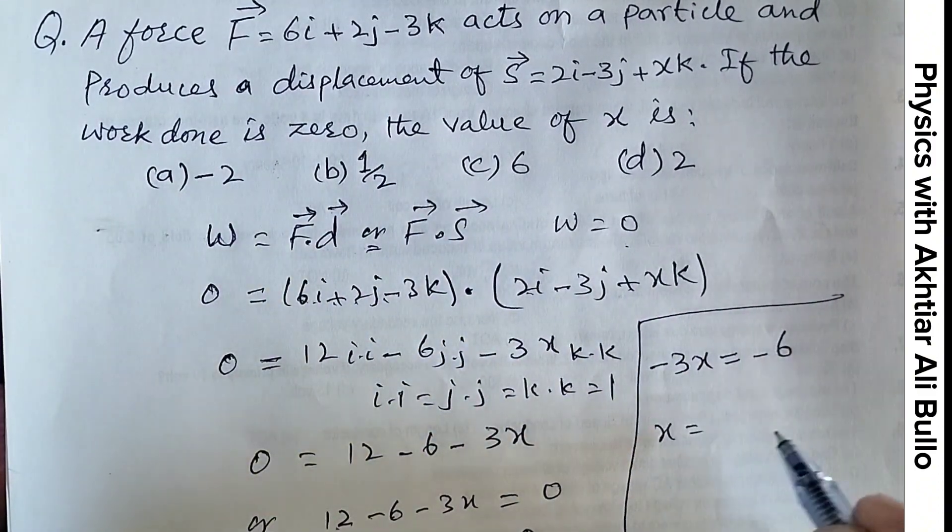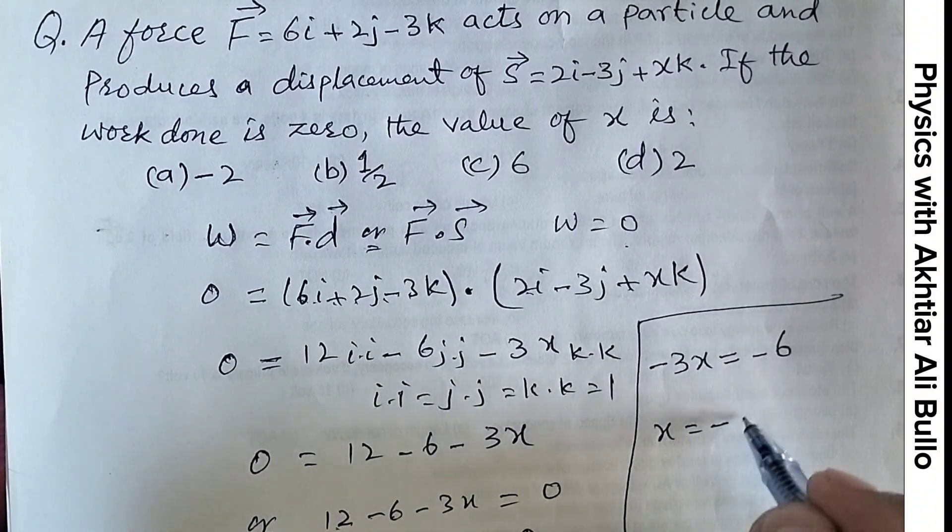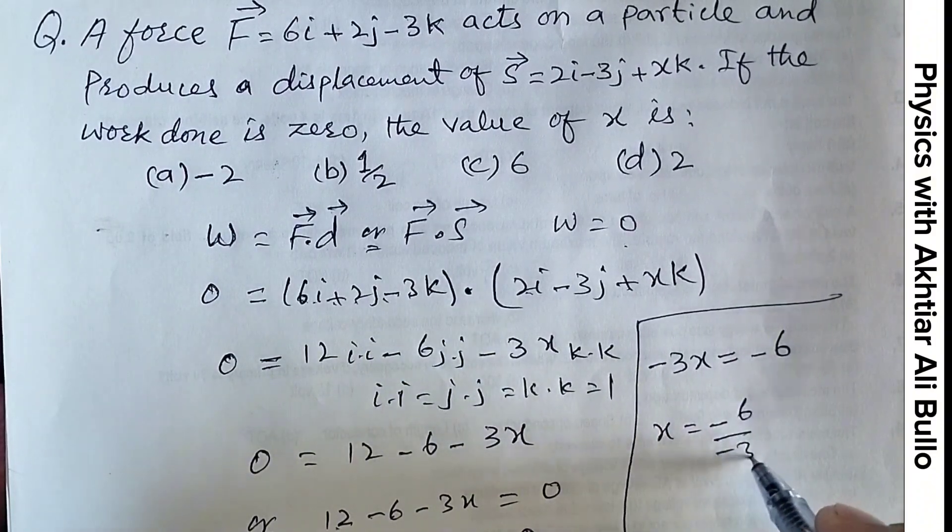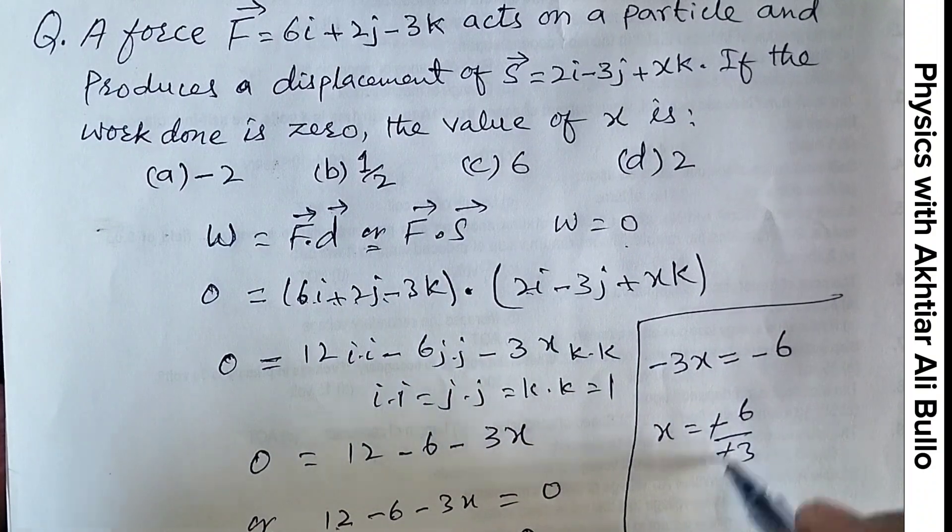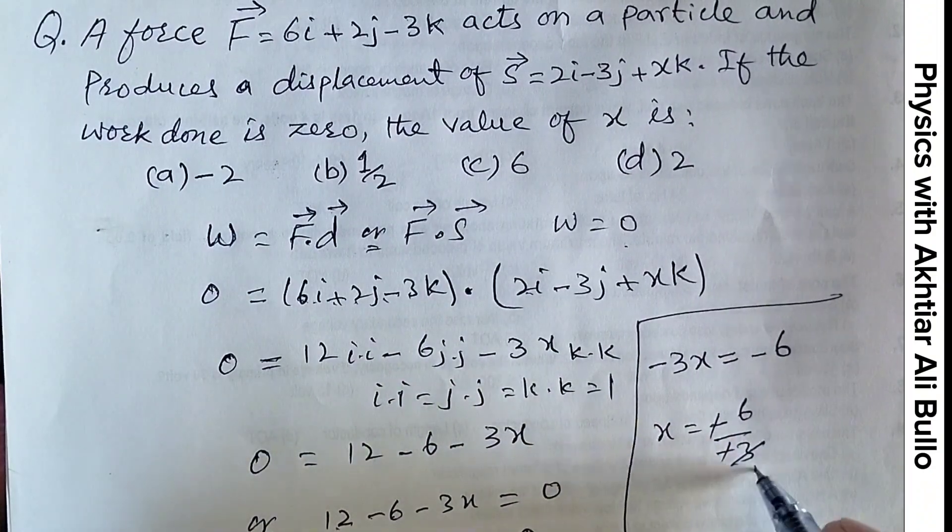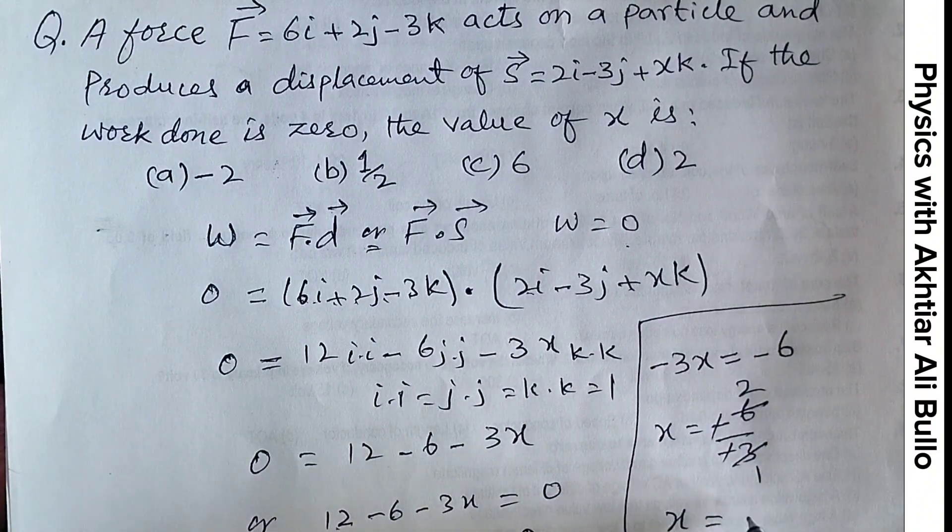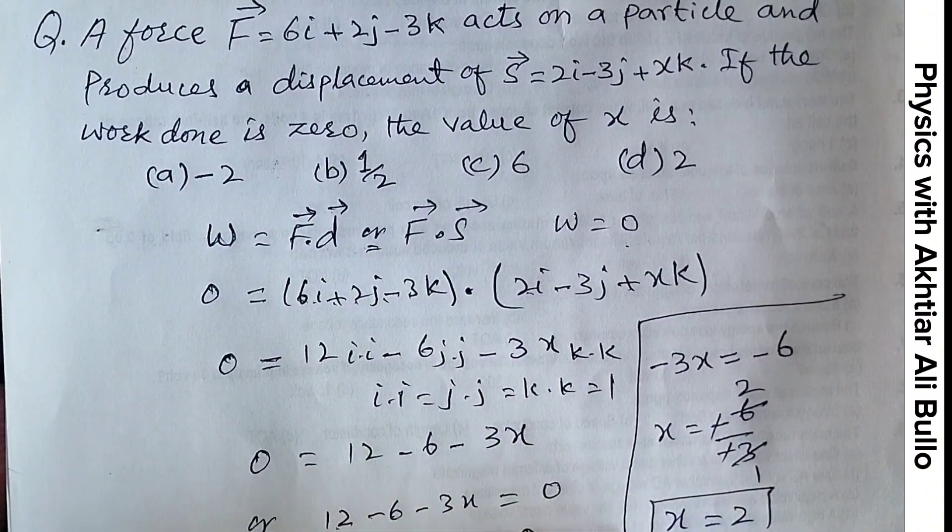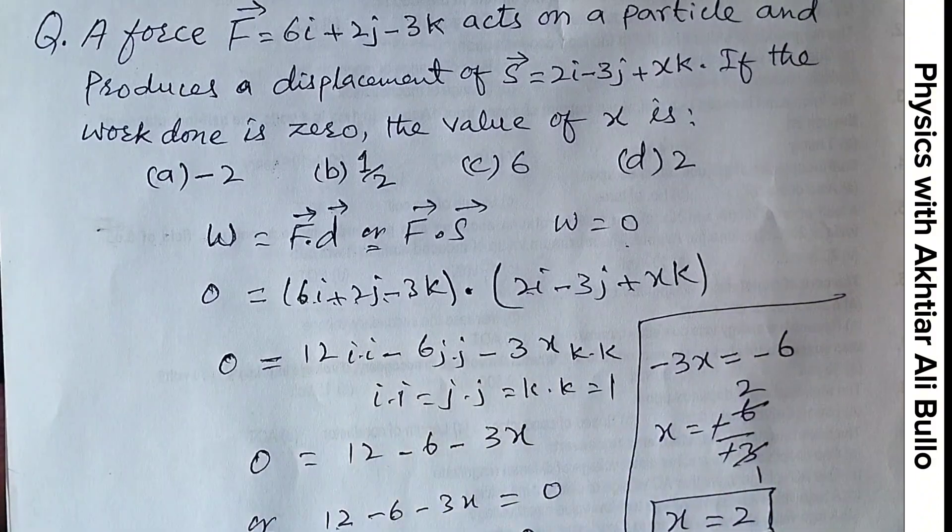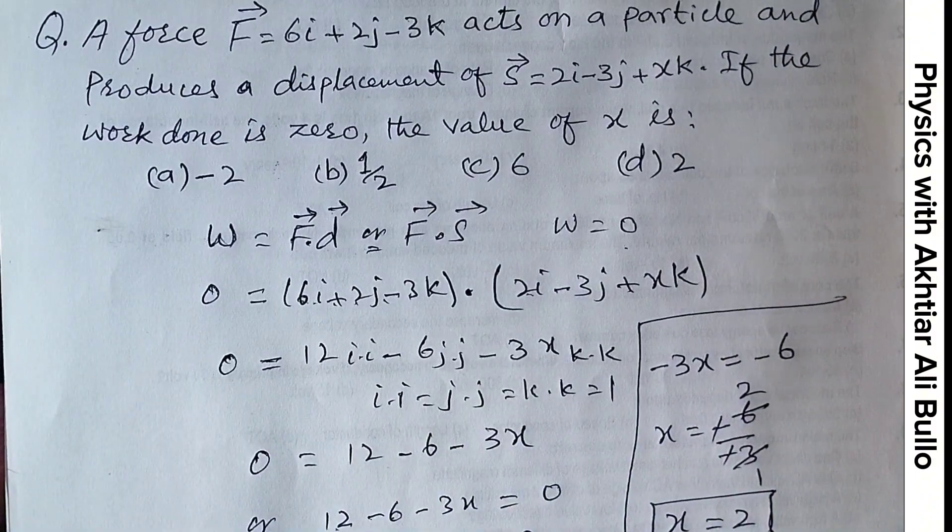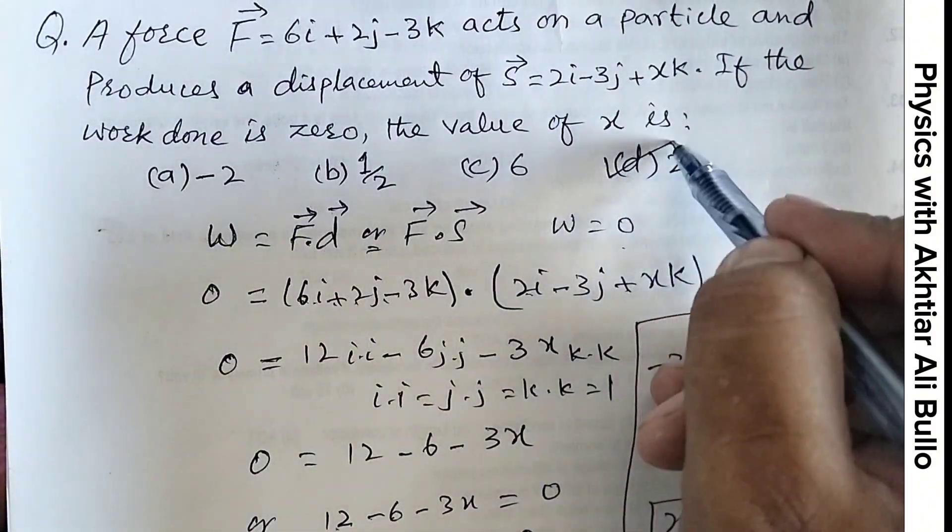So, X will be equal to minus 6 upon minus 3. Minus when cancelled with minus, the table of 3 on 3 is 1 time and on 6 is 2 times. So, X will be obtained as 2. So, the correct option will be D, 2.